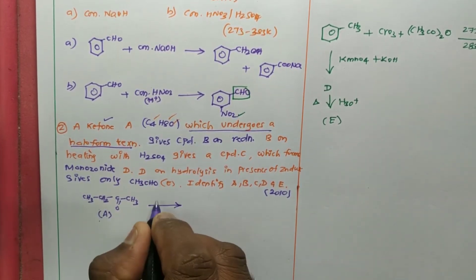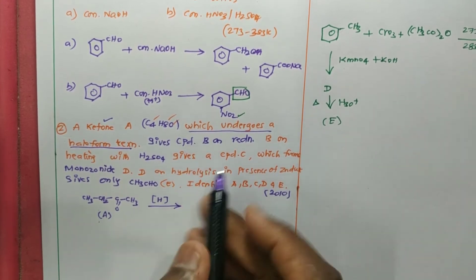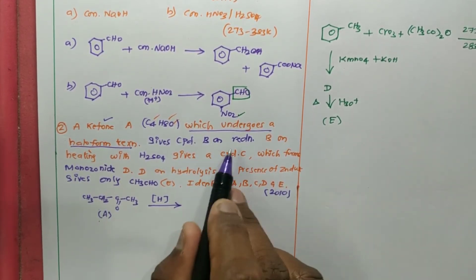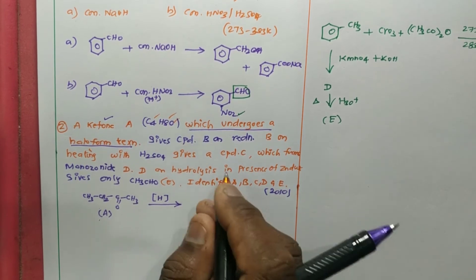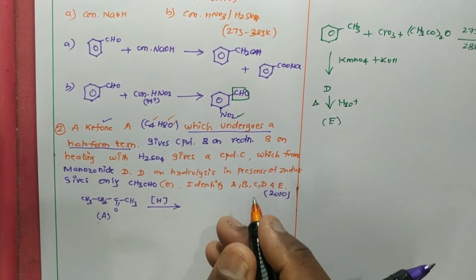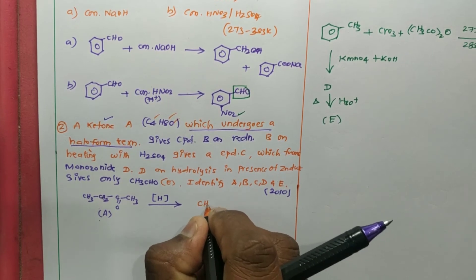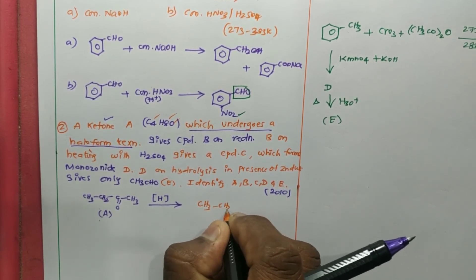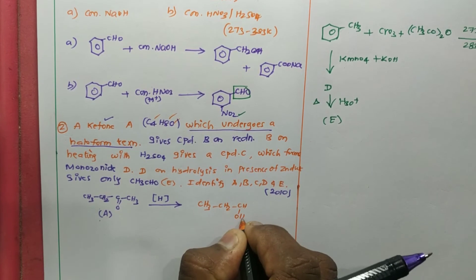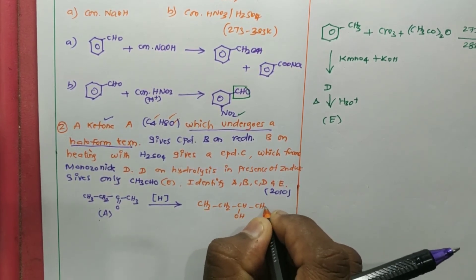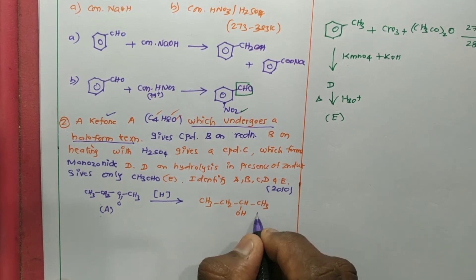Now, this undergoes reduction. While using a reducing agent, I will be getting a product. When a ketone is reduced, I will be getting a secondary alcohol. Likewise, the product is CH3-CH2-CH(OH)-CH3. This is the product B — a secondary alcohol — that I will be getting.